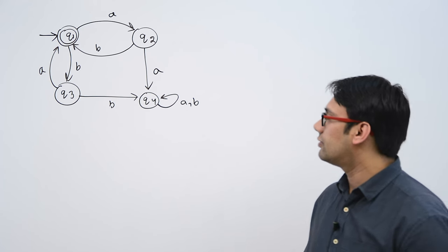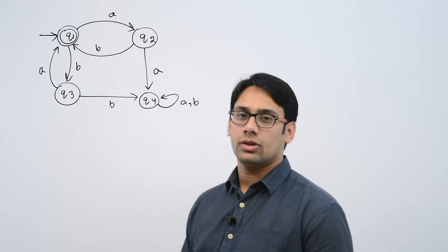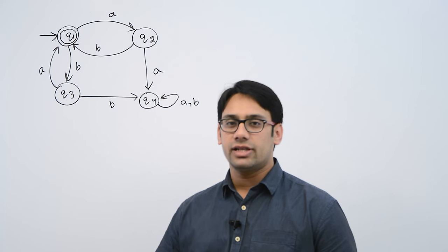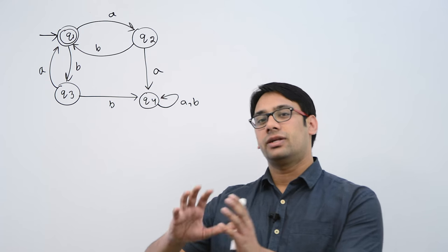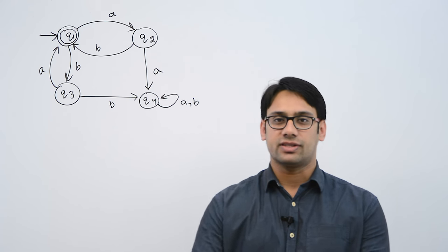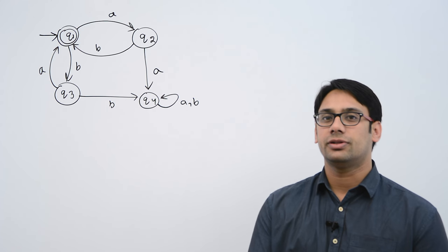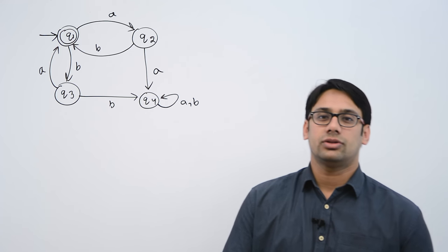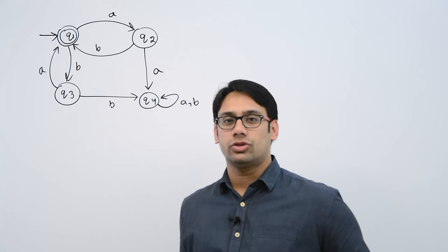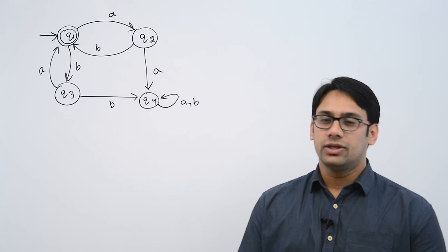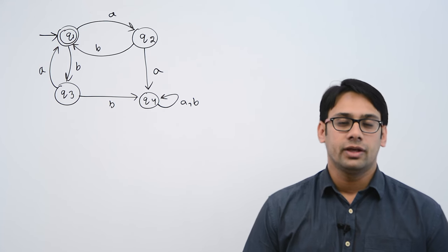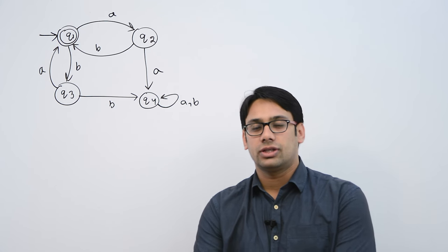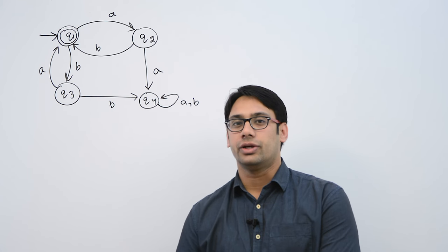Now let us look at this finite automata. This finite automata is, actually I have taken a complicated example directly instead of taking simple examples because I think this method is so simple that you don't actually need simpler examples. I can directly jump on to the complicated methods. So here we need to make a regular expression for this given finite automata. And we are going to use the Arden's method to give regular expression. So let us see how to do it.